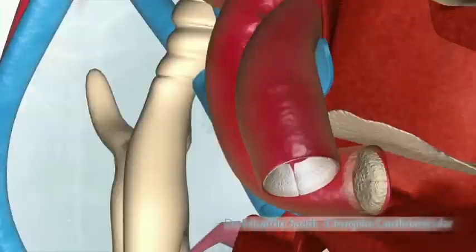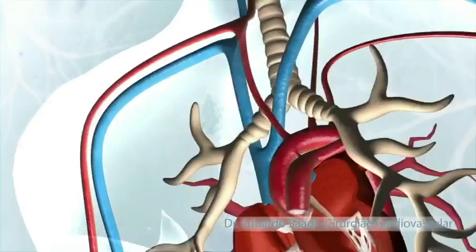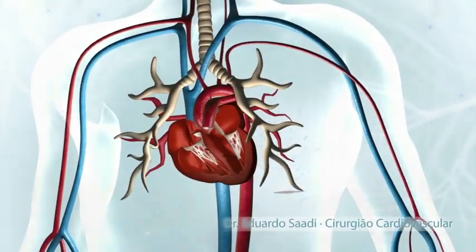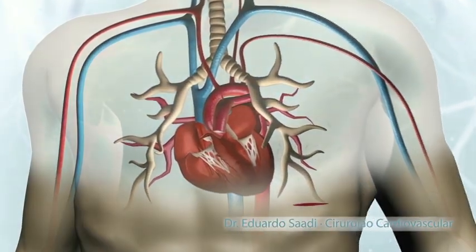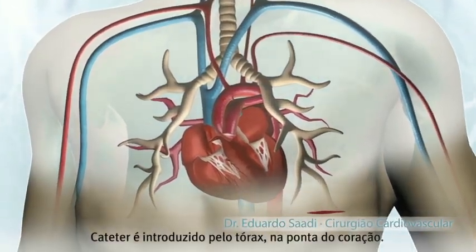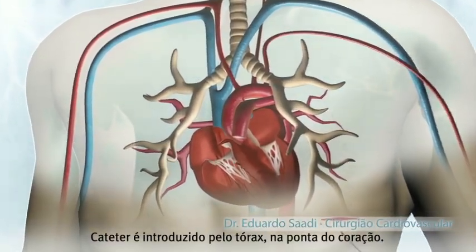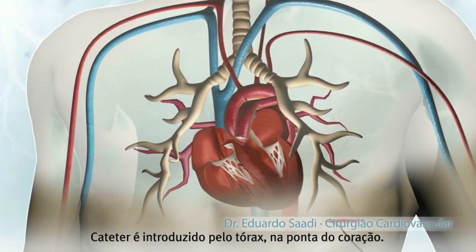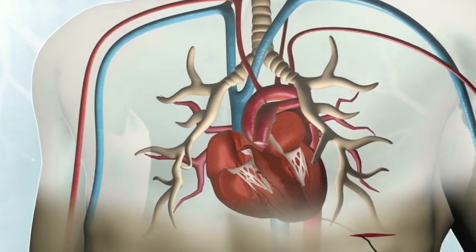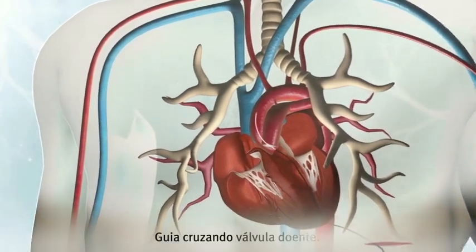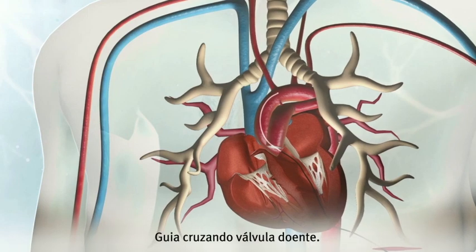In trans-catheter aortic valve implantation, also known as TAVI or TAVR, by the transapical approach, a small incision is made in the left chest.